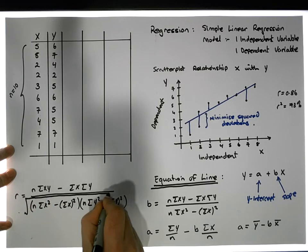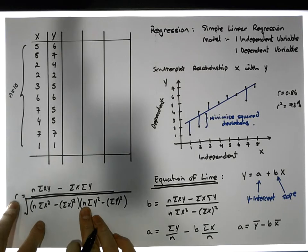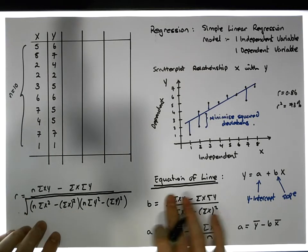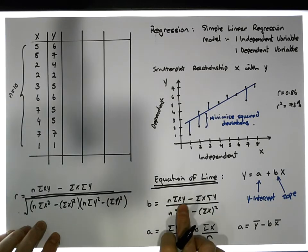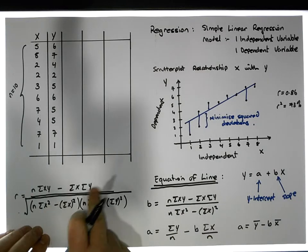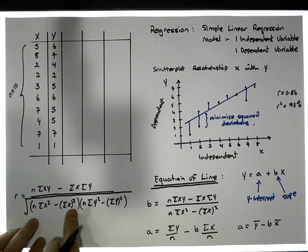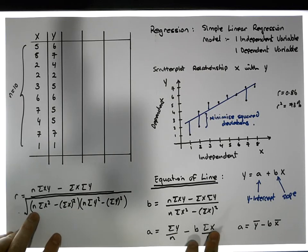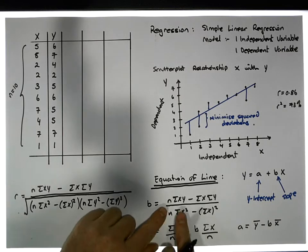Usually when doing correlation and regression analysis together, we get for free the particular values going into estimating these parameters. n times sigma(xy) minus sigma(x) times sigma(y) is the numerator in the correlation calculation; n times sigma(x²) minus sigma(x) squared is the left part of the denominator. So we can calculate b directly from those values, and then calculate a straight away.